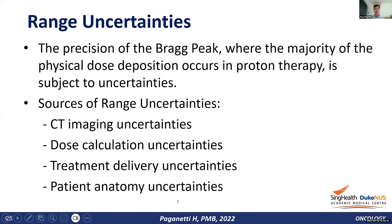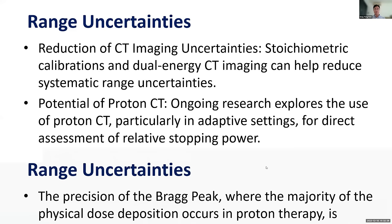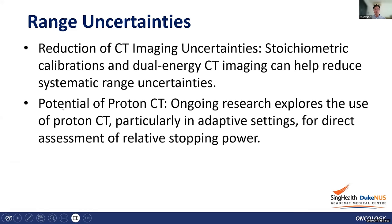Range uncertainty comes from several sources: CT imaging uncertainties, typically around 3.5%; dose calculation uncertainty; treatment delivery uncertainty; and patient anatomy uncertainty. CT imaging uncertainties can be reduced by applying stoichiometric calibration, and dual energy CT imaging can help reduce systematic range uncertainty. Potentially, proton CT could remove this inherent CT uncertainty entirely. Patient anatomy and setup changes can have varying effects on range uncertainties depending on treatment site and technique.